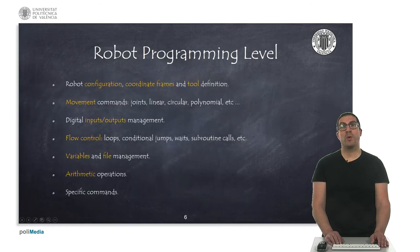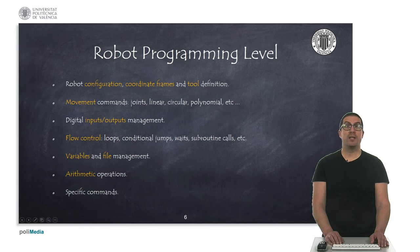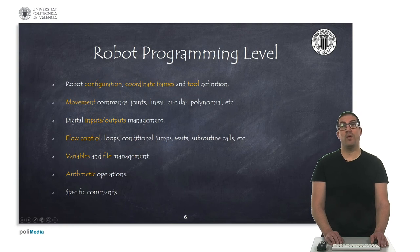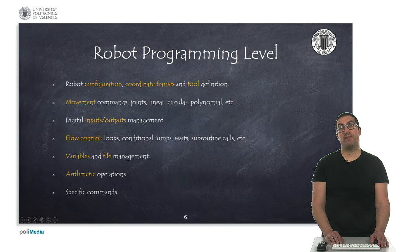In general, all robot programming languages will include a set of instructions that allow you to define robot configurations, set different coordinate frames, as well as the type of tool. They have movement instructions to control robot joints with coordinated and non-coordinated movements, such as linear and circular movements, and you can set the maximum admissible speeds, accelerations, and accuracy. You can also read digital inputs or activate digital outputs connected to the robot controller, and control the flow of your program using loop instructions, conditional jumps, waits, routine calls, etc. You can also store information in variables, manage files, and perform simple arithmetic operations. Many languages also have specific commands designed by each manufacturer for more specific tasks or to adjust internal control parameters.